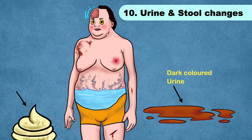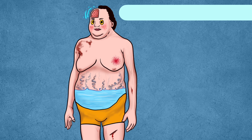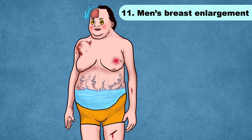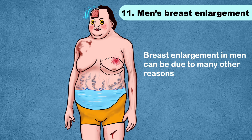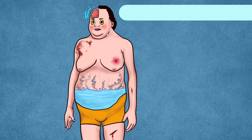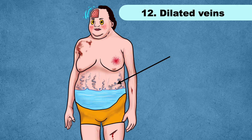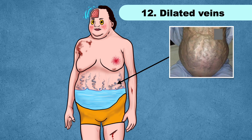Other important signs of fatty liver disease include dark-colored urine and pale stool. In men, fatty liver disease can be responsible for breast enlargement — though this can be due to many other reasons, so correlate with other signs and symptoms. You may also see dilated veins under your skin, which can be a sign of non-alcoholic fatty liver disease.